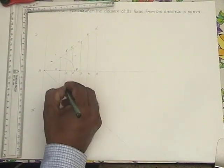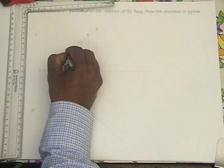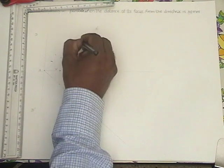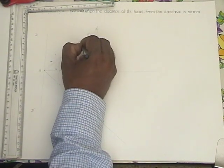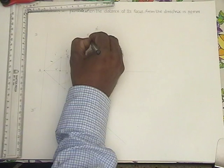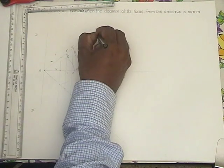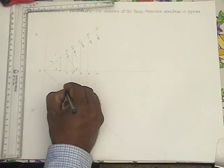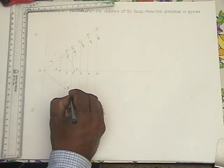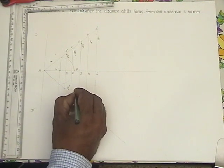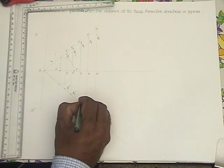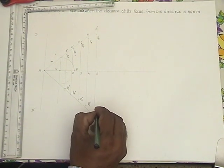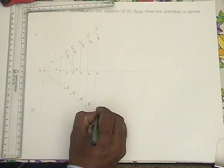Now name these points. This point is F1, this is F2, this is F3. Then you have F4, you have F5. In a similar way, you get F1 dash, F2 dash, F3 dash, F4 dash, and F5 dash.